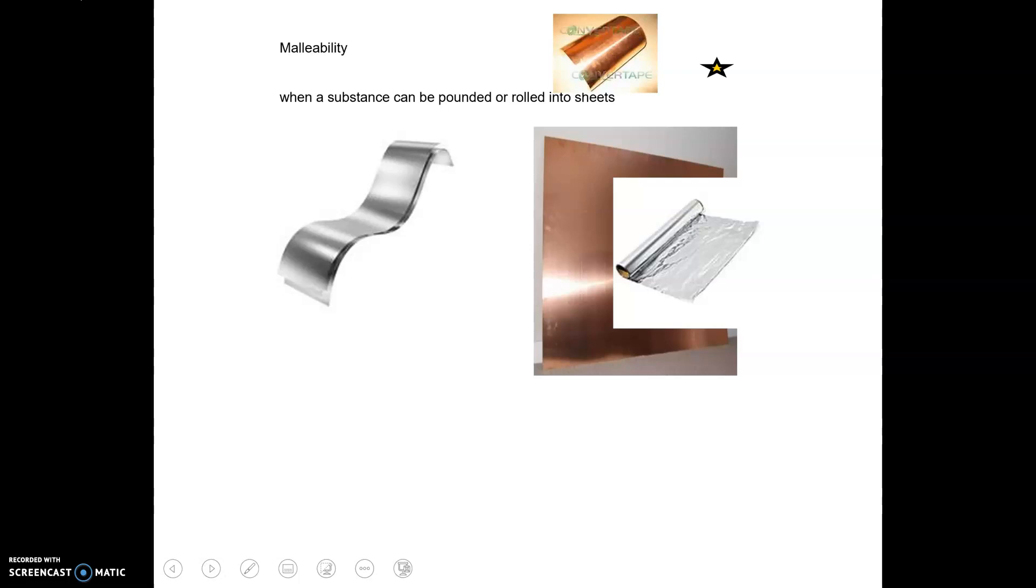So malleability is when a substance can be pounded or rolled into sheets, but it's best to warm it up first. So here we got good old aluminum, so we can make that to an aluminum foil.